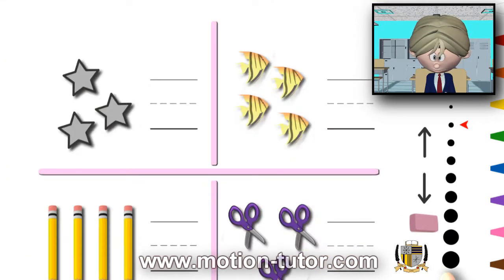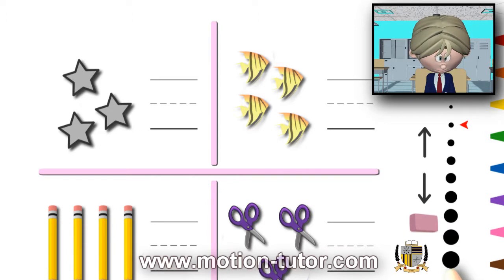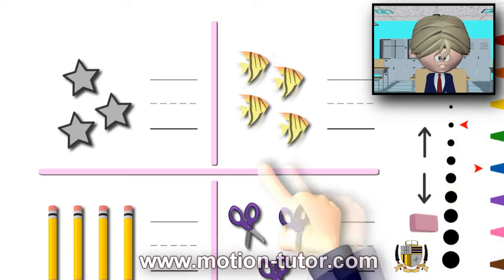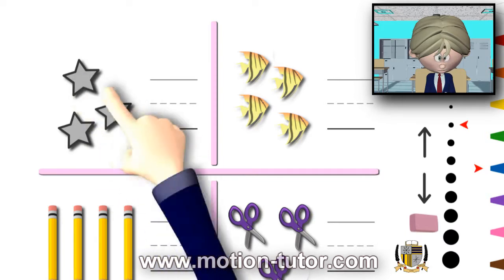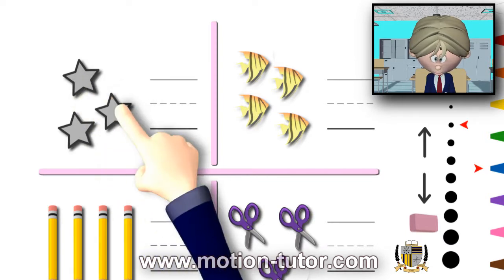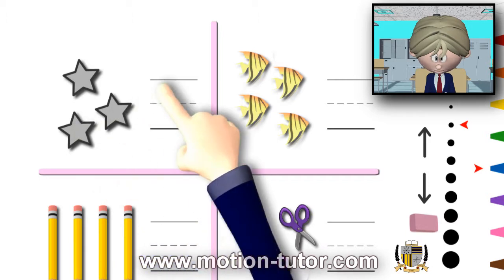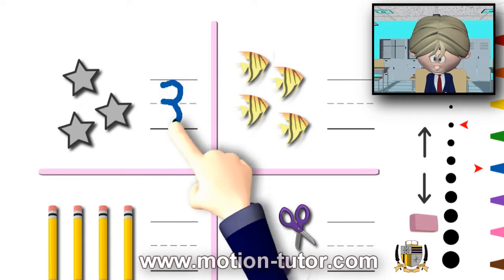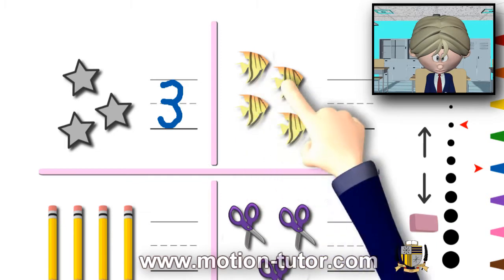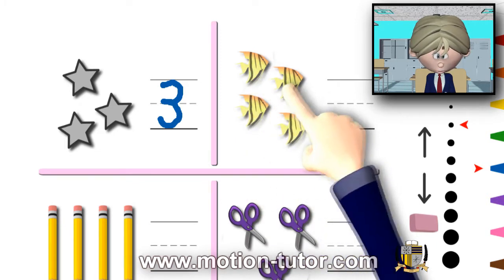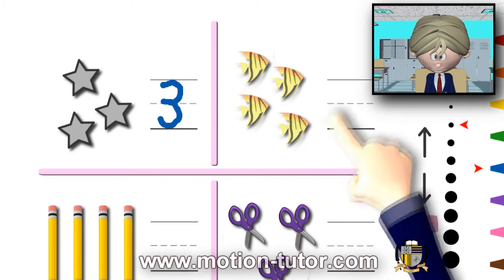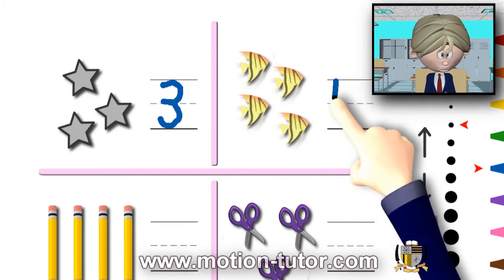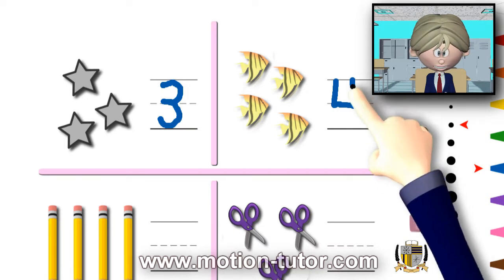Moving on — for this one, we're going to count the objects and write the number. How many stars do you see here? One, two, three. Three stars. Remember how you write the number three? Curve, and then you do another curve. How many fish do we see? One, two, three, four. Remember how we write the number four? We go down, we go over, and then we cross that.